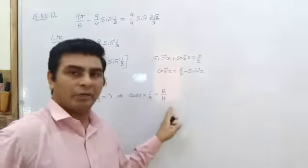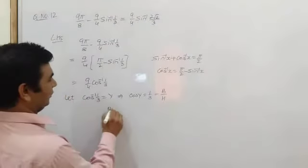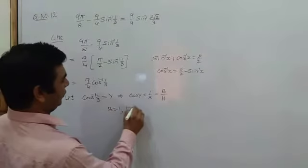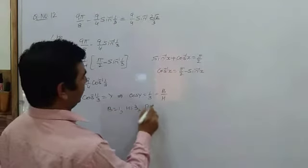Cos theta is equal to base upon hypotenuse, so this is base upon hypotenuse. Base is your 1, hypotenuse 3, then perpendicular will be equal to